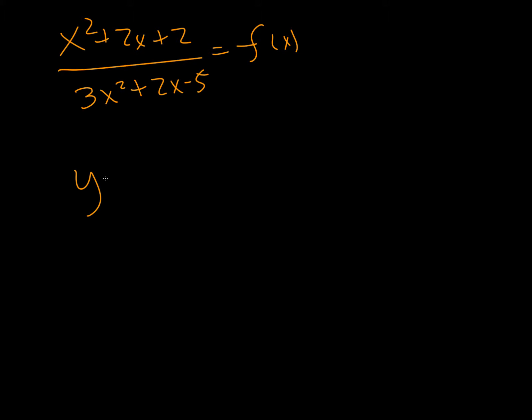So let's just get started. y equals 6 over x minus 2, and then plus 4. We're asked to find the asymptotes of the function, the axis intercepts, and then use technology to help sketch the function based on that.